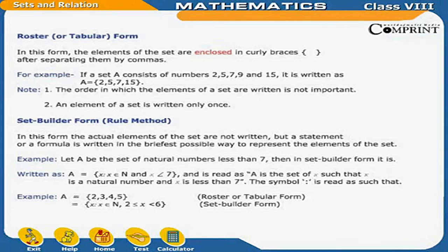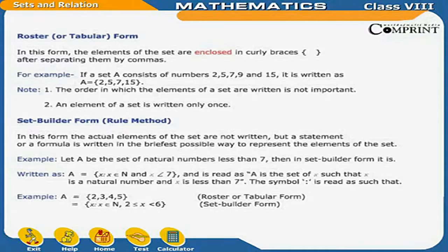Set builder form or rule method: in this form, the actual elements of the set are not written, but a statement or formula is written in the briefest possible way to represent the elements. For example, let A be the set of natural numbers less than 7. In set builder form, it is written as A = {x : x ∈ ℕ, x < 7}. The symbol colon is read as 'such that'. For example, A = {2, 3, 4, 5} in roster form is written as A = {x : x ∈ ℕ, 2 ≤ x < 6} in set builder form.